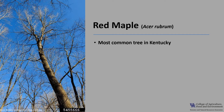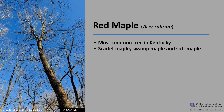Red maple, Acer rubrum, is the most common individual tree species in Kentucky. It is also known as scarlet maple, swamp maple, and soft maple.